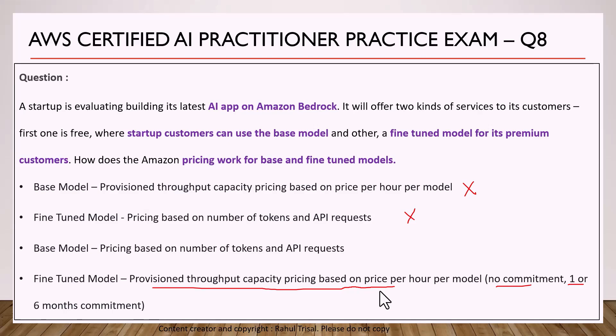When you fine-tune a model within Amazon Bedrock and deploy it, pricing is not based on number of tokens and API requests. It is based on provisioned throughput capacity. So regardless of whether you make any API requests or not, you will still be charged per hour per model. You can get a reduction with a six-month or one-month commitment, but even without a commitment you are charged on provisioned throughput capacity and hours — not on how many requests you make.